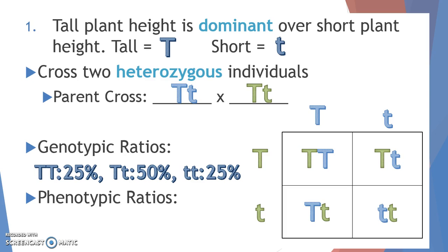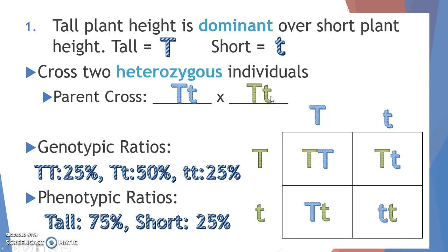The last step is to interpret the genotype into a phenotype. Looking back at the problem, a capital T means tall — so if you see even one capital T in a genotype, that plant will be tall. That gives us 25% (TT) plus 50% (Tt) equals 75% tall. Since the last genotype has no capital T and is all recessive, that means lowercase tt is short, giving us 25% short. So every time these plant parents reproduce, there is a 75% chance their offspring will be tall and a 25% chance they will be short.